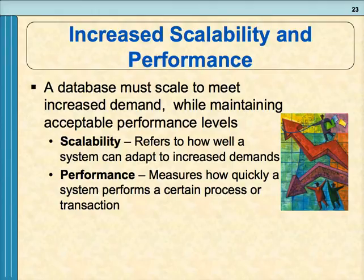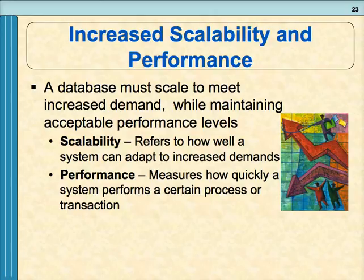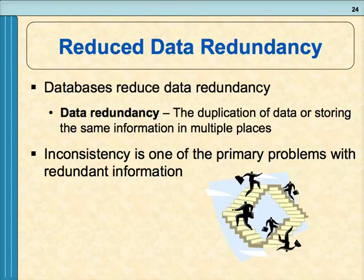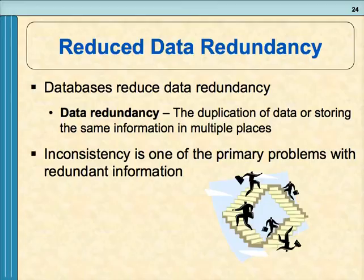Performance measures how quickly a system processes a transaction — how many seconds to process an order after you hit submit. Data redundancy means storing the same information in multiple places, which can lead to inconsistency — having different versions of the same customer or employee information in those multiple locations.